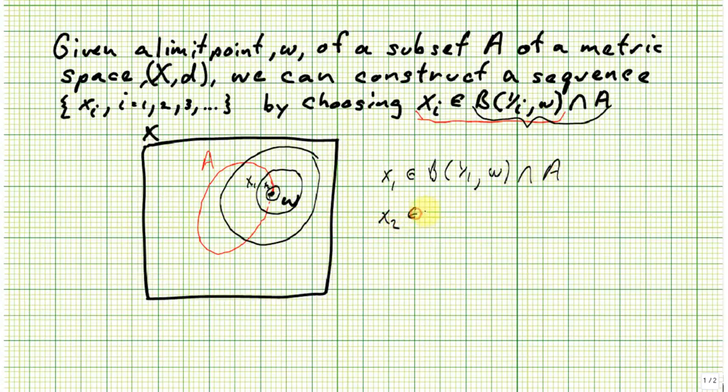x2 is an element of the ball of radius one half around w, intersected with a. x3 is an element of the ball of radius one third around w, intersected with a.